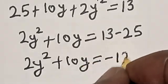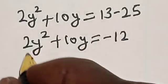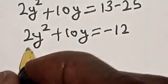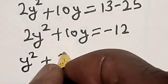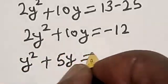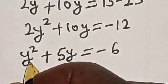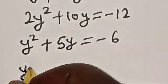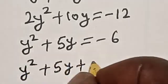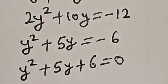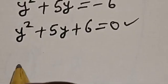This is 2y squared plus 10y is equal to minus 12. Now let's divide through by 2, then we have y squared plus 5y is equal to minus 6. So let's bring this minus 6 to this side: we have y squared plus 5y plus 6 is equal to 0. This is a quadratic equation which can be solved using the factorization method.